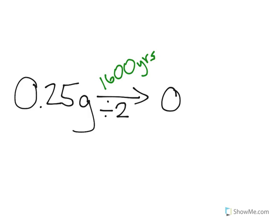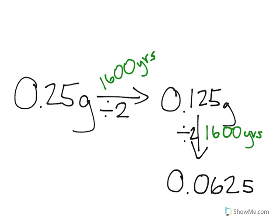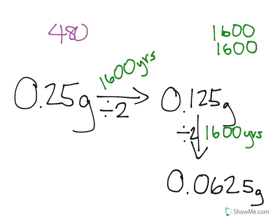And if I divide that by 2, I get 0.125 grams. Let's divide that by 2 again. If we divide that by 2 again, now I have another 1,600 years. And if I get that, I also have that as 0.0625. And after dividing that by 2, I get 0.03125 grams. And since I started out with 2 significant figures, I'm going to have 2 significant figures in my answer. So my final answer should be 0.031 grams.